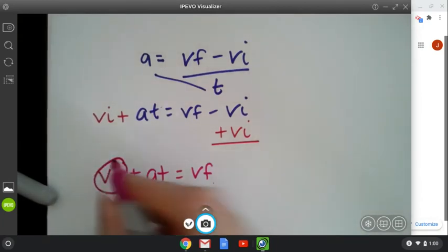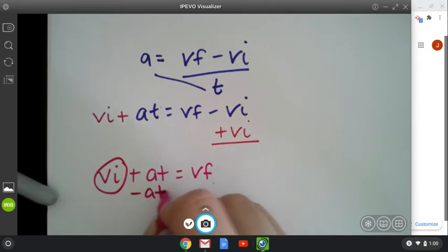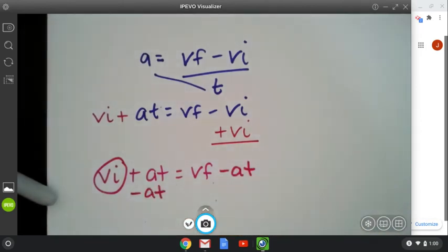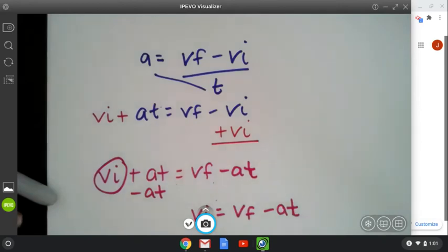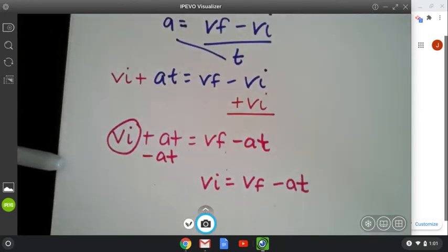So we had this one earlier and we solved for vf. So to get vi by itself, we're going to subtract at, subtract at. So our initial velocity is your final velocity minus your acceleration and time. So that's how you find initial velocity. So we have one last thing we need to solve for, t or get time by itself.